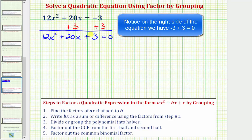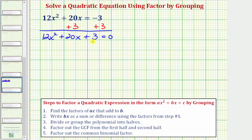Now for our next step we want to factor the left side of the equation. To do this we'll use the technique of factor by grouping where the steps are shown below. To factor a quadratic expression in the form ax squared plus bx plus c by grouping, we follow these five steps, where the first step is to find the factors of ac that add to b.